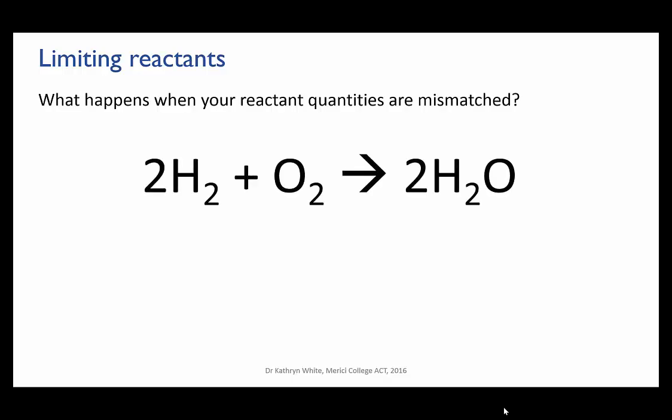For instance, say we were reacting hydrogen with oxygen to give water, blowing up a hydrogen balloon for instance. We know that two moles of hydrogen reacts with one mole of oxygen, but what if we happen to accidentally mix two moles of hydrogen with two moles of oxygen? What would be left at the end of the reaction?